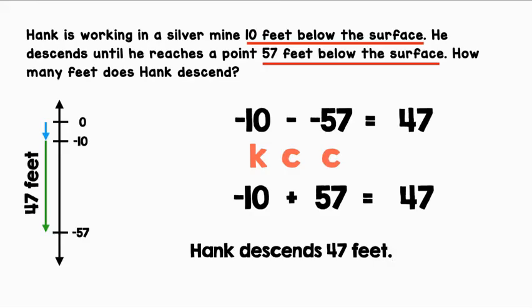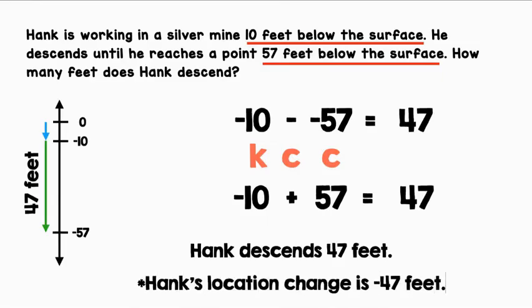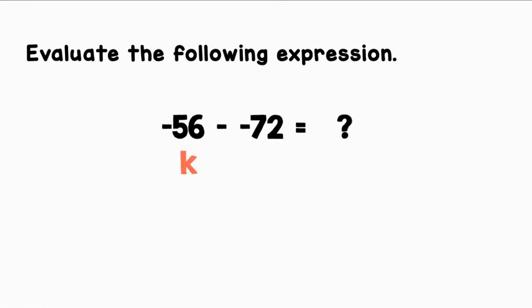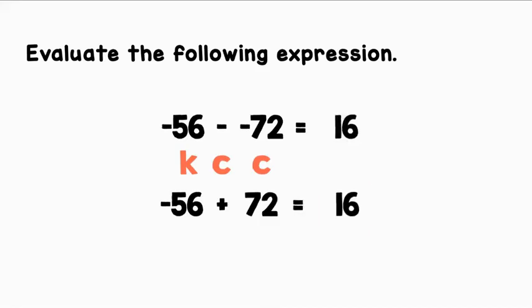The word descend implies that it's negative, so we can also say that Hank's location change is negative 47 feet. Evaluate the following expression: negative 56 minus negative 72. Let's keep the negative 56, change subtraction to addition, and change negative 72 to positive 72. Negative 56 plus 72 equals 16.